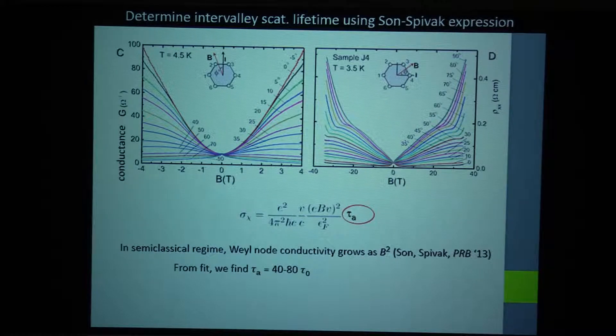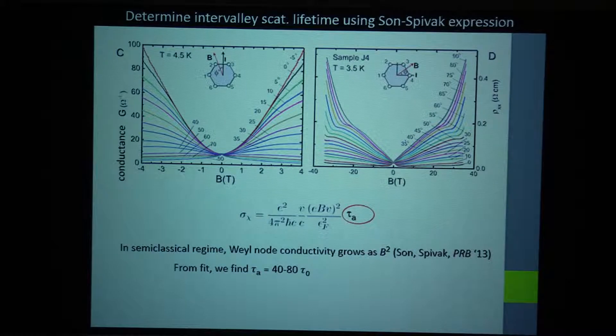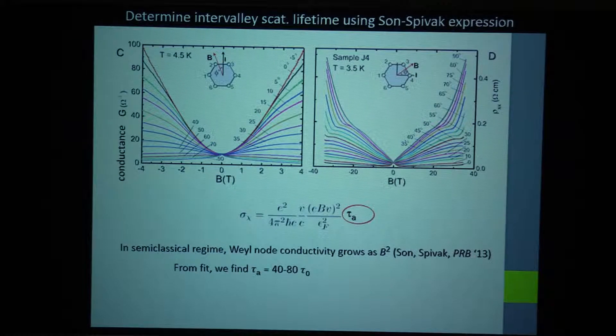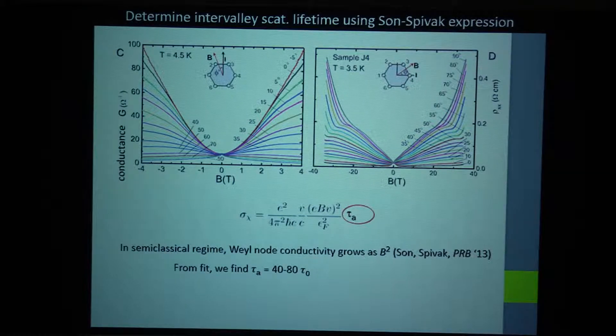If you go up at one Tesla, it's already almost as large as the zero field conductance. But then if you go to two Tesla, it's really five to six times larger. It's going up quadratically at a very rapid rate.